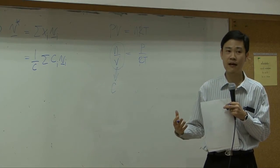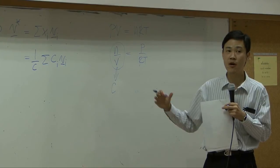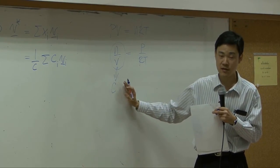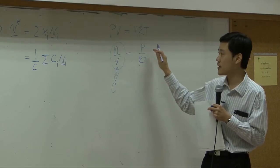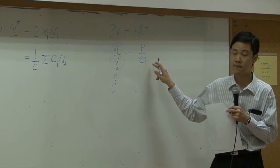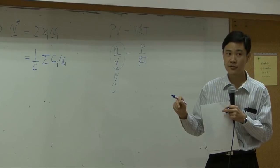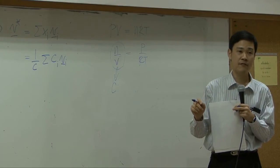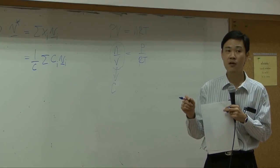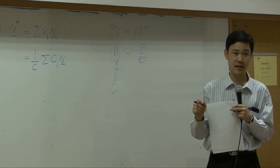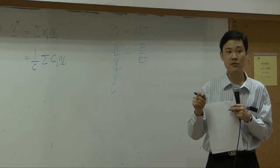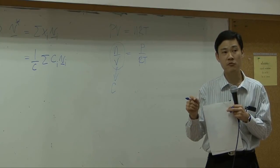That's why whenever you have gas or vapor, it is more convenient to use molar basis because you can convert it directly to pressure and temperature using the ideal gas law. Also, whenever you have a chemical reaction in the system, it is more convenient to use molar basis as well because chemical reaction is represented according to stoichiometry ratio.